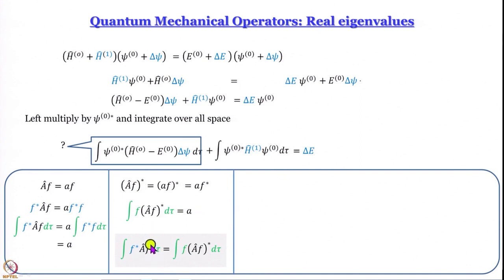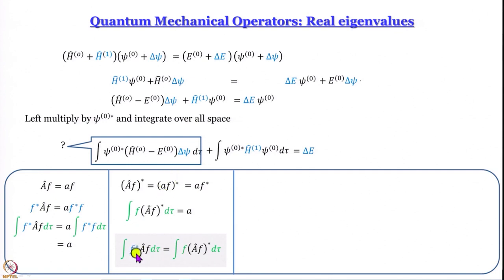Now we have something close to what we need, but this expression involves the same function f on both sides. What we actually need is an expression involving two different functions — something like ∫f*Âg dτ. We have to see whether we can get from here to an expression with two different functions. That is what we are going to take up in the next module — we stop here and will continue right from here.